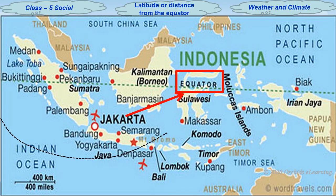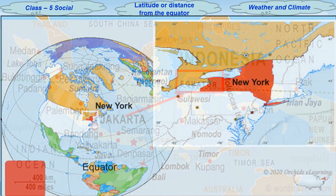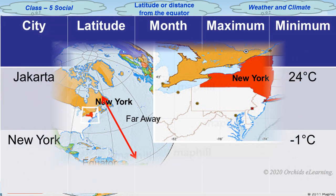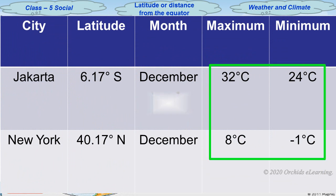Jakarta is very close to the equator, while New York is quite far away from it. Look at the table showing the temperatures in December in these two places.